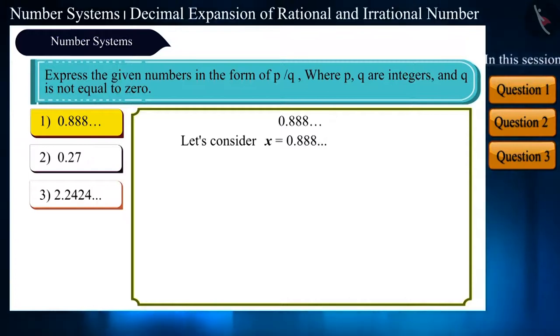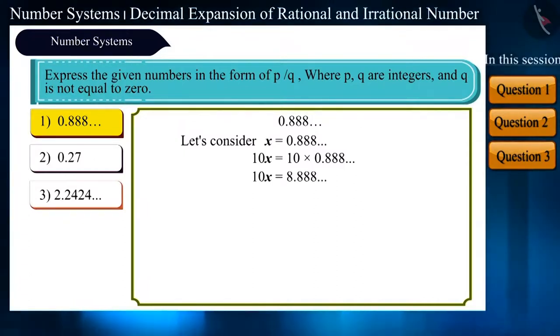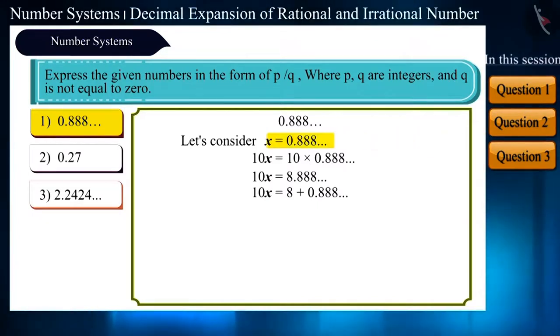So, we will multiply both sides by 10. After multiplying, we get 8.888. That is, the decimal went one step to the right. Now, we can also write it as 10x is equal to 8 plus 0.888. We have assumed 0.888 as x. Therefore, it will be 10x is equal to 8 plus x.